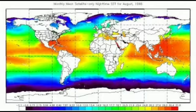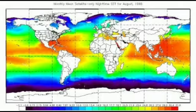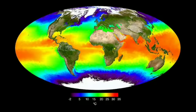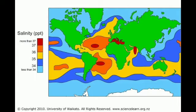The Benguela Current is a cold current which originates in the Antarctic Ocean and flows along the coast of South West Africa. Generally, between Cape Town and 18 degrees south, the current cools the western coast of South Africa and Namibia. The Kalahari Desert is largely a result of this current, as it helps in reducing the relative humidity of the eastward moving warm and moist air masses.